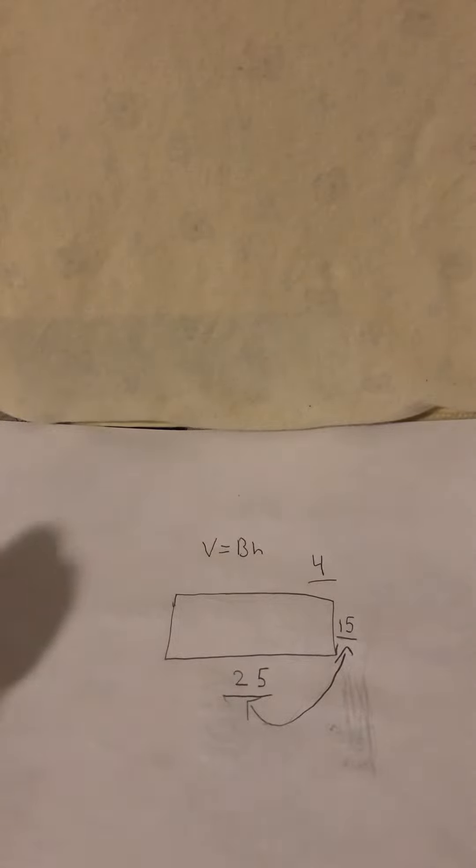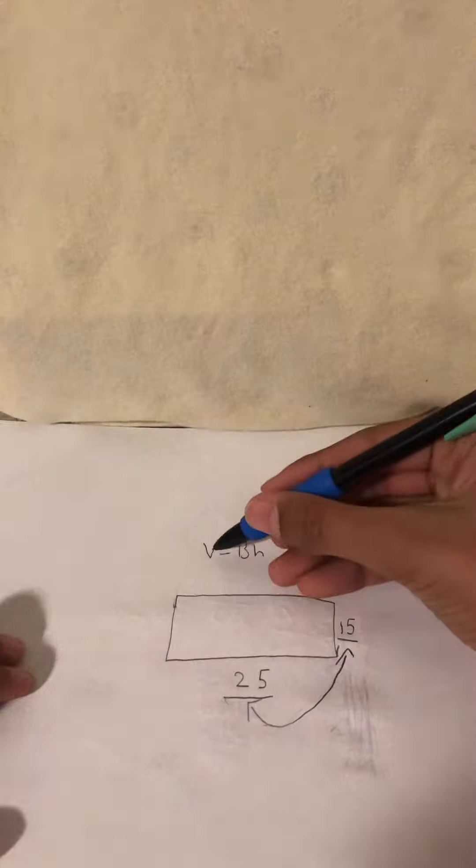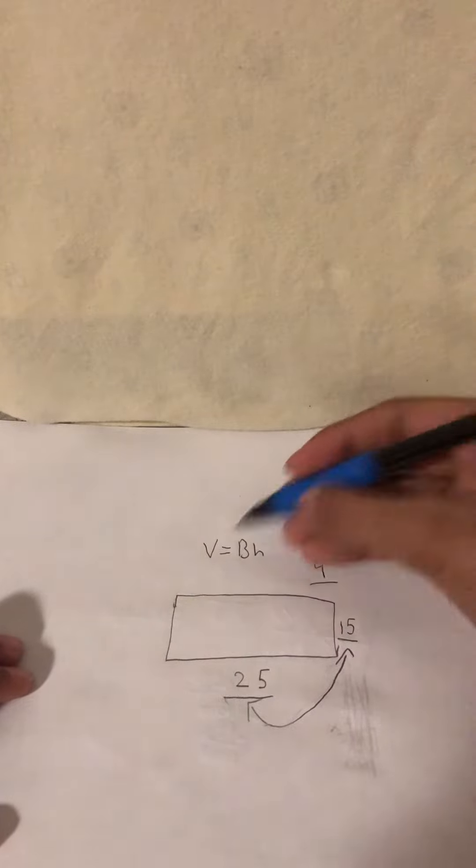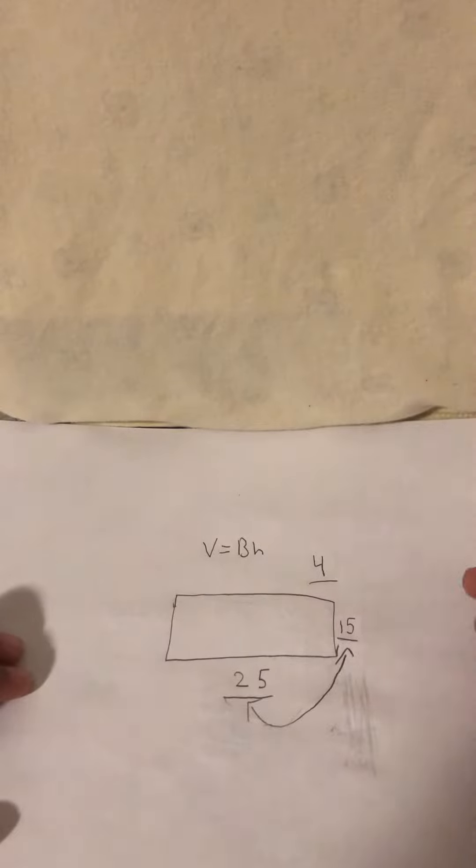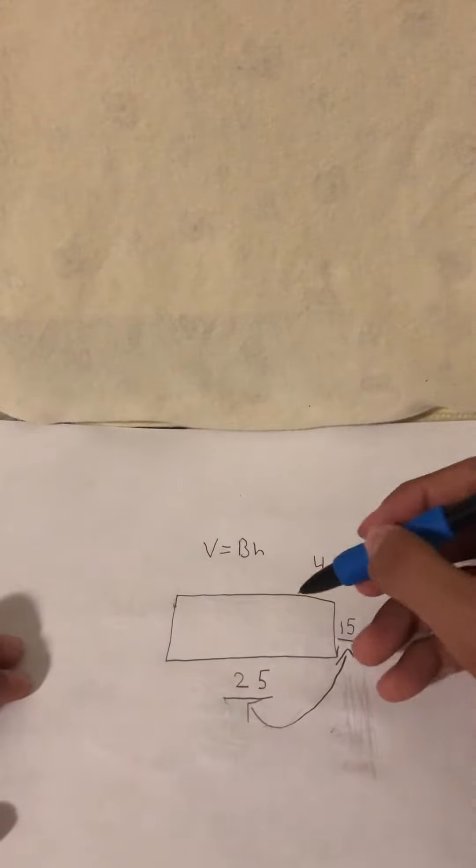Hey guys, today I'll be showing you how to do the volume of a rectangular prism. Our formula is V equals BH, that means volume equals base times height. So first we have both of our bases.